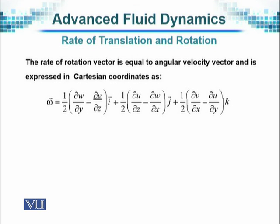The unit vector i is in the X direction. The Y-direction component of the rate of rotation is half of the partial derivative of U with respect to Z minus the partial derivative of W with respect to X, multiplied by unit vector j. The Z-direction component is half of the partial derivative of V with respect to X minus the partial derivative of U with respect to Y. These three components together represent the vorticity vector, also called the rate of rotation, in the i, j, k directions.